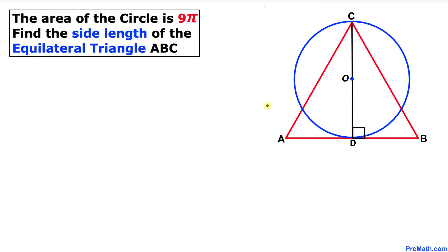Welcome to PreMath. In this video tutorial we have an equilateral triangle ABC, as you can see in the figure, along with a circle with center O. D is the point of tangency, and the area of the circle is 9π. We are going to calculate the side length of this equilateral triangle ABC. Let's get started with the solution.